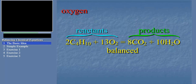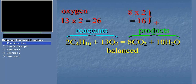Now let's look at the oxygen atoms. Among the reactants, we see a total of 26 oxygen atoms. There are two products which contain oxygen atoms, so we have to add them together. From eight carbon dioxide molecules we get 16 oxygen atoms, and from 10 water molecules we get 10 oxygen atoms. So the total number of oxygen atoms among products is 8 times 2 plus 10, which is 26. We have 26 oxygen atoms on the left and 26 on the right — therefore, the oxygen atoms are also balanced.